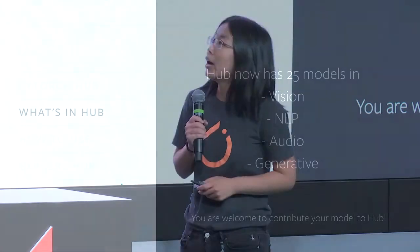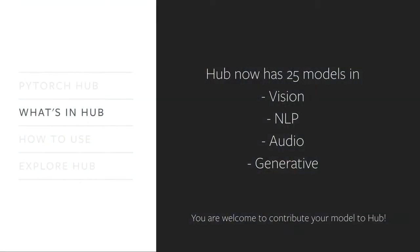Currently, PyTorch Hub has a live web page on PyTorch.org. We have more than 25 models in different domains: image segmentation, classification, language, audio, and GANs.